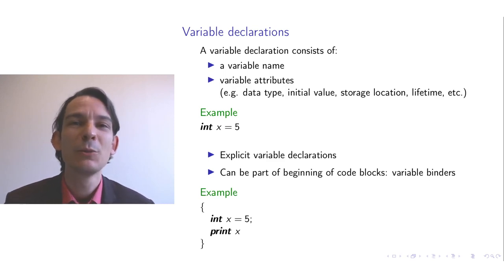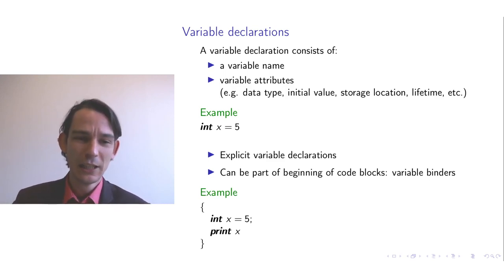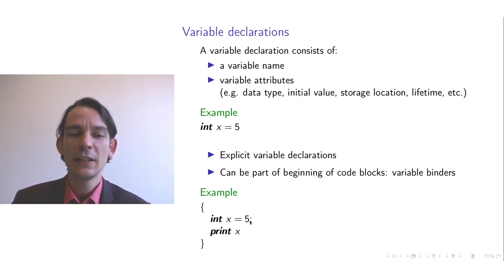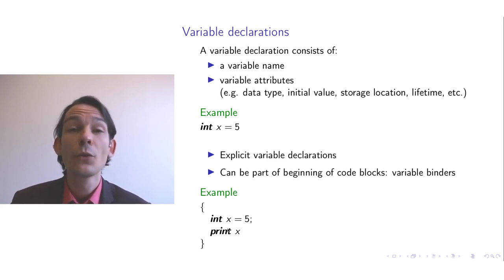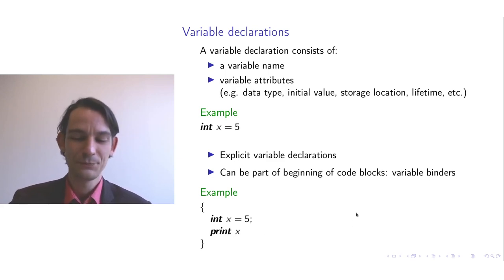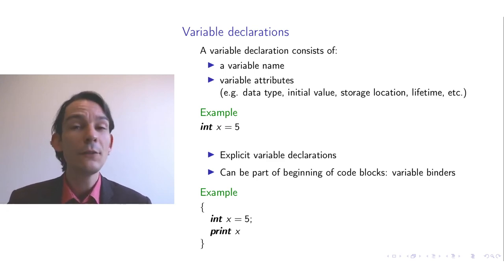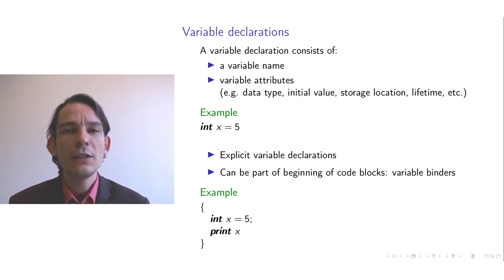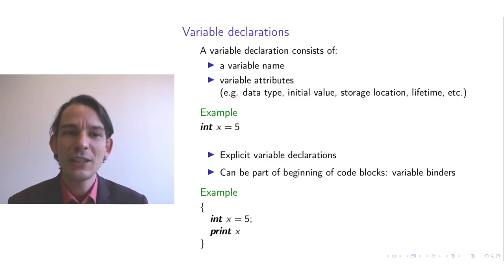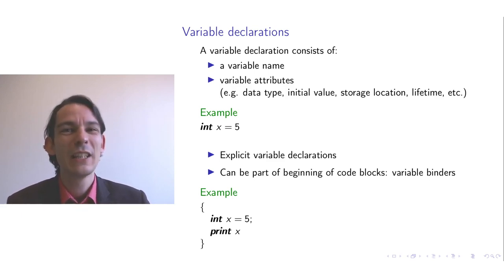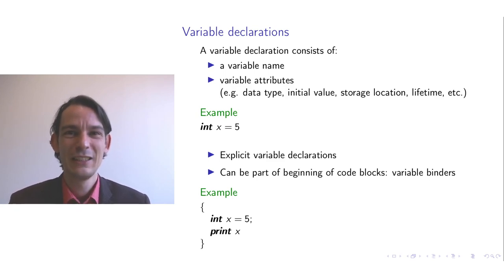An example of a variable declaration within a code block looks like this: you have a code block with braces, first you declare variables — say x with initial value 5 — and then the contents of the code block follow, in this case a print command. The purpose of variable declarations is so that you can associate attributes to the variable.